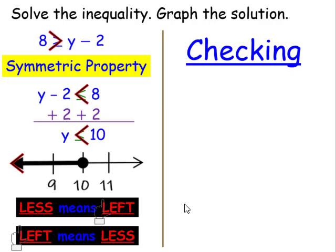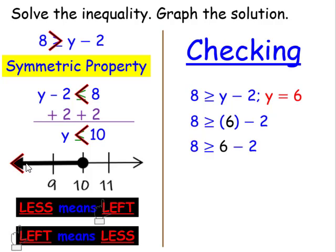Now we can check this to see if our solution set is reasonable. When we check the equations, we would check to see if our solution is correct. In this case, we're checking to see if our solution is reasonable. 10 is part of the solution, so we can use 10 if we wanted to. But I always like to use one that's further along. We can use 9.9, we can use 9, 8, and so forth. I'm going to use 6. I'm going to substitute 6 for y. 6 minus 2 is 4, and 8 is in fact greater than or equal to 4. So therefore, our solution is reasonable. We can still have a mistake, but at least we know our answer makes sense.